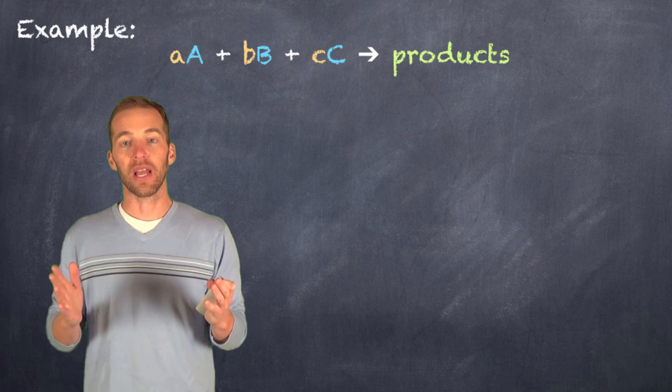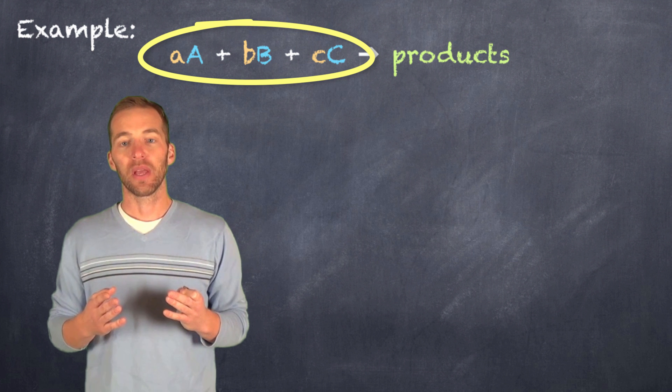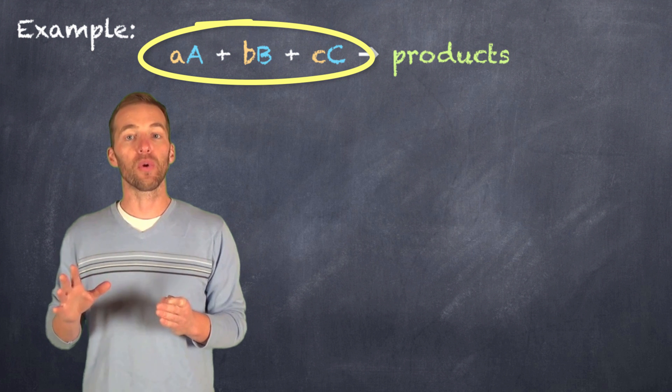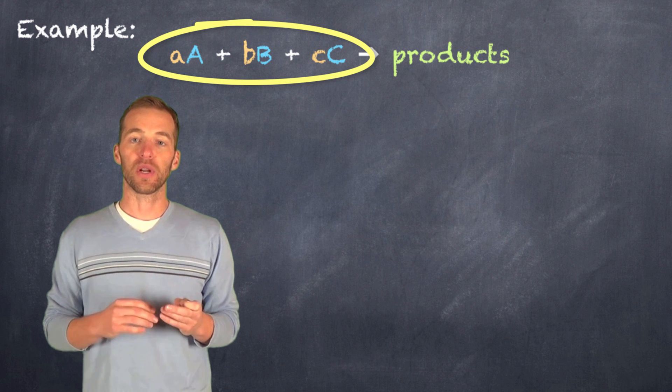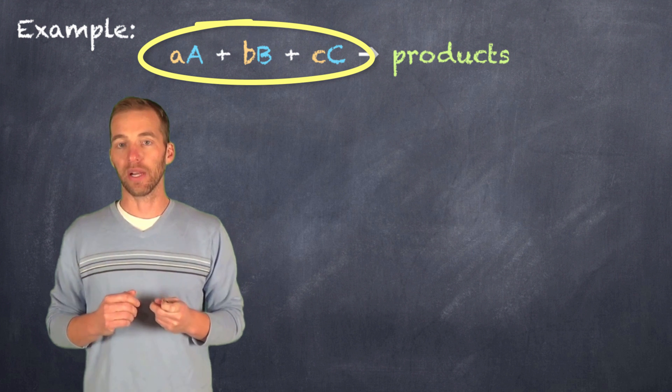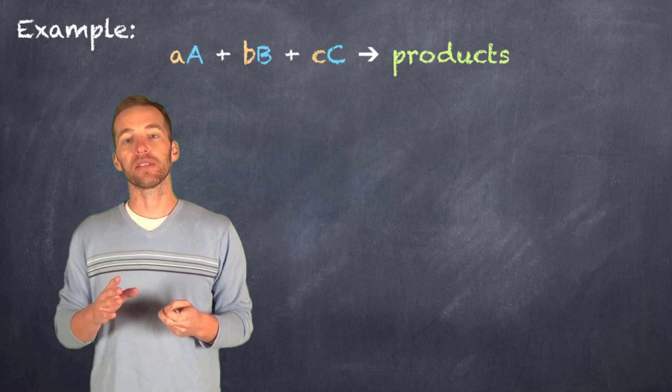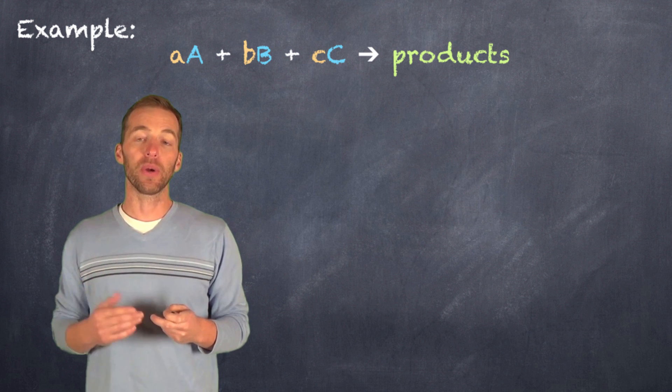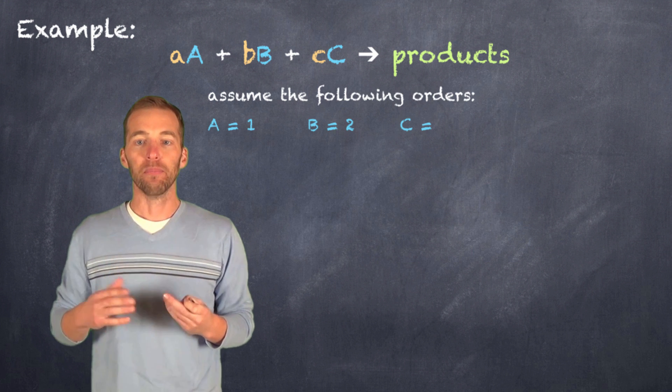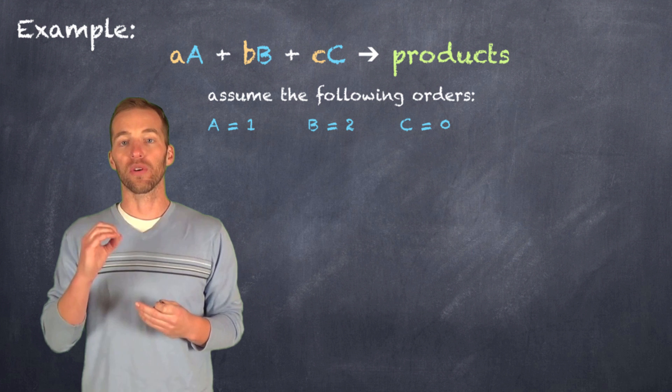So here we have an example in which we have three reactants. Now we have the coefficients represented by the lowercase values, and of course we're not considering the concentration of the products just yet, because if we're using initial rates, there are no products right now. So if we take a look at this, we establish experimentally that the following orders are true, that A has an order of one, B has an order of two, and C has an order of zero.